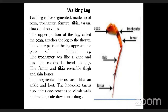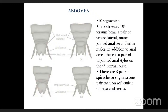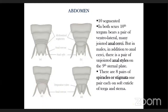The abdomen is ten-segmented in both sexes. The tenth tergum bears a pair of ventrolateral, many-jointed anal cerci. In males, in addition to anal cerci, there is a pair of unjointed anal styles on the ninth sternal plate. There are eight pairs of spiracles or stigmata, one pair per segment, present in the soft cuticle between the terga and sterna.